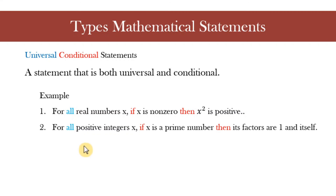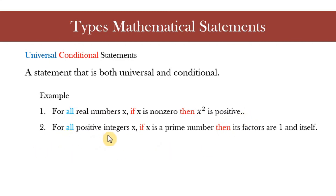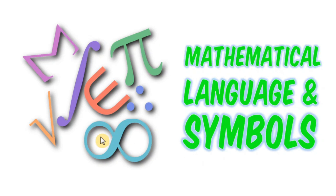The fourth type is called a universal conditional statement — a combination of the first and third types. For example: for all real numbers x, if x is non-zero, then x squared is positive. Another example: for all positive integers x, if x is a prime number, then its factors are one and itself. There you have it — mathematical sentences and the different types of mathematical statements.